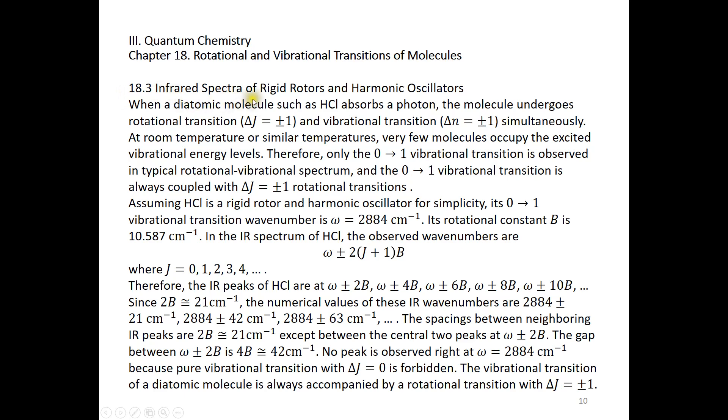Infrared Spectra of Rigid Rotors and Harmonic Oscillators. When a diatomic molecule, such as HCl, absorbs a photon, the molecule undergoes rotational transition and vibrational transition simultaneously. For the rotational transition, delta J must be plus or minus 1.